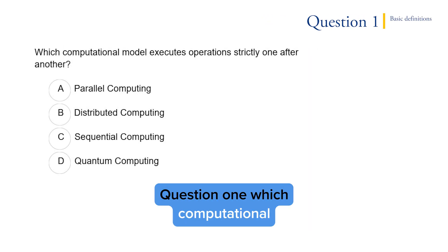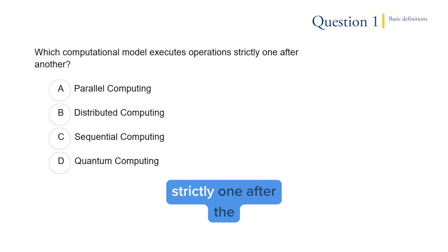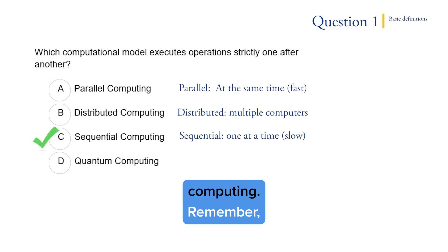Question one: Which computational model executes operations strictly one after the other? This one is pure definition, and it's sequential computing. Remember, sequential is one at a time and it's slow.